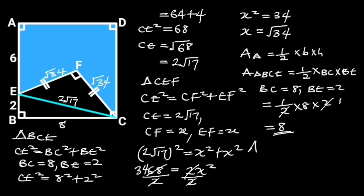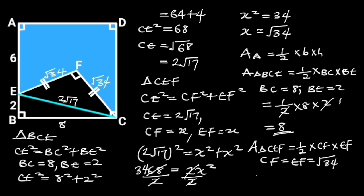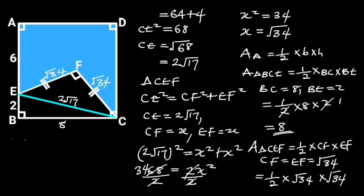Next, let's find the area of triangle CEF. The area of triangle CEF is equal to ½ times CF times EF. CF is equal to EF, which is equal to √34. Plugging in these values gives us ½ times √34 times √34. √34 times √34 is equal to 34. So we have ½ times 34, and 34 divided by 2 is equal to 17 square units.